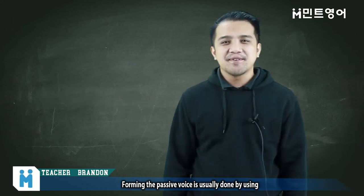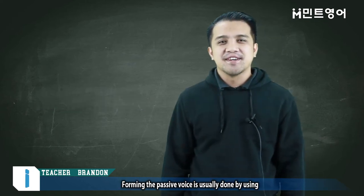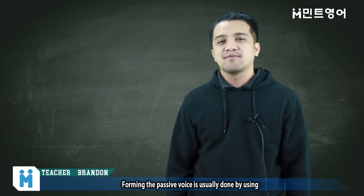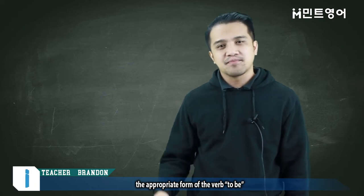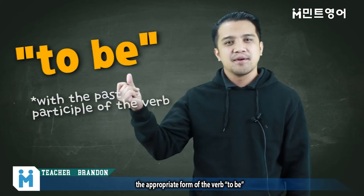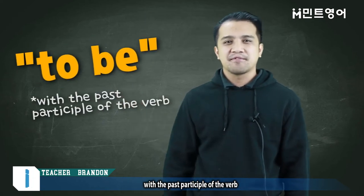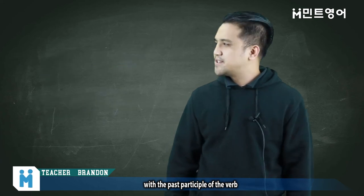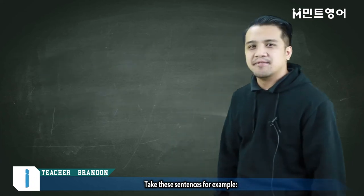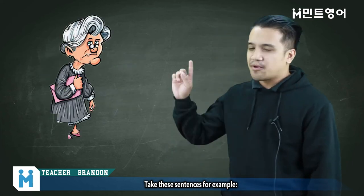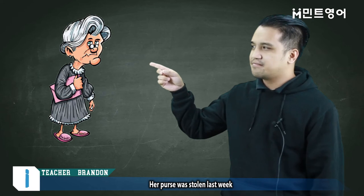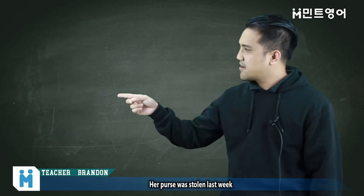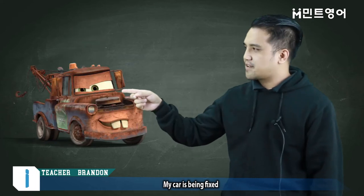Forming the passive voice is usually done by using the appropriate form of the verb 'to be' with the past participle of the verb. Take these sentences for example: 'Her purse was stolen last week.' 'My car is being fixed.'